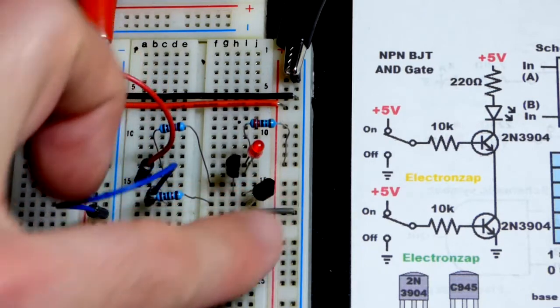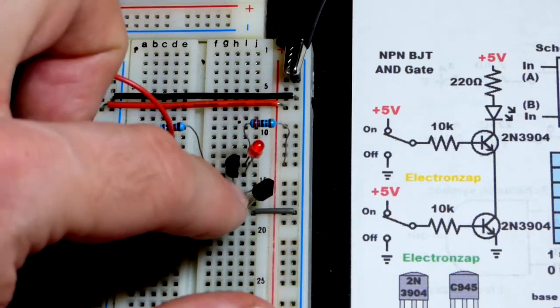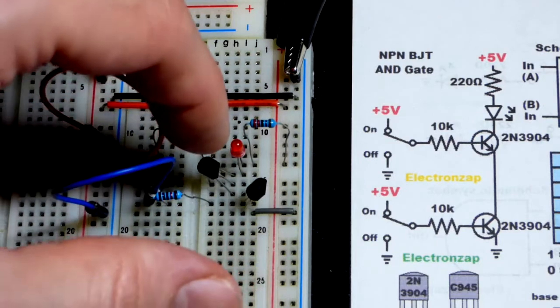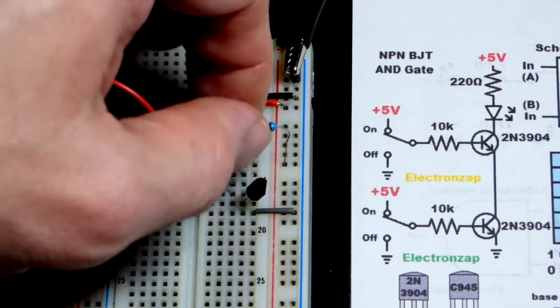So emitter to ground, base to the resistor there and collector to the emitter of that transistor. Wired the same but here we have the LED.